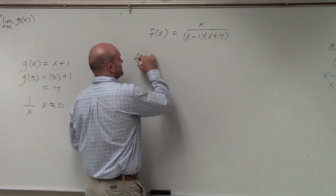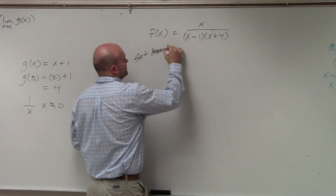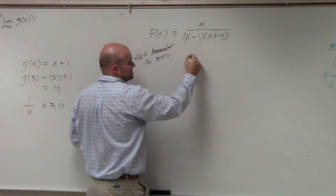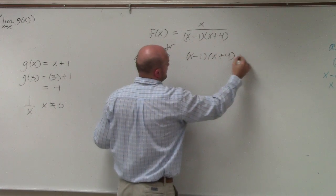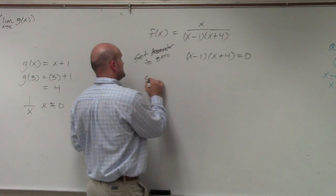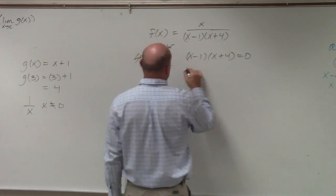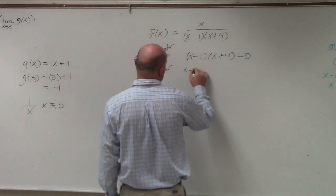So the first thing you do is set denominator to 0. So whatever's in the denominator, you set it equal to 0. If you have to solve, then solve for x. Oh, look it. We did the 0 product property. Good thing we went over that again today.